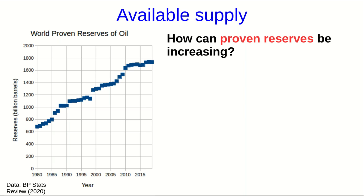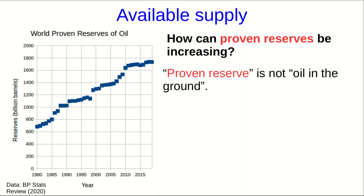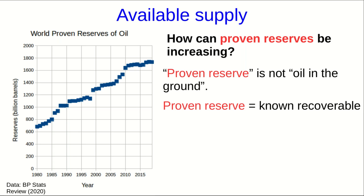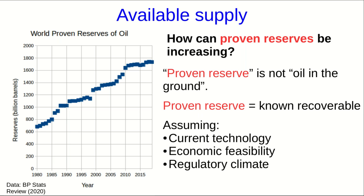This comes down to understanding what's actually meant by the term proven reserve. The first thing to realize is that proven reserve is not the same as oil in the ground. Absolutely, we are pumping oil out of the ground at quite a high rate, so the actual quantity of oil in the ground has to be decreasing. What proven reserve really means is the amount of known recoverable oil — recoverable under assumptions of current technology, economics, and what the regulations are. When a geological survey discovers some volume of oil in the ground, that whole volume is not part of the proven reserves; only a fraction of it is — the fraction that is known to be recoverable in a profitable manner.